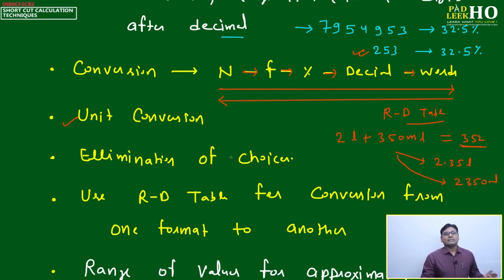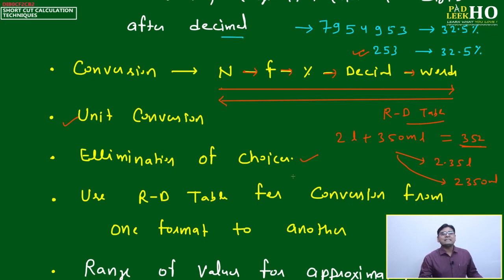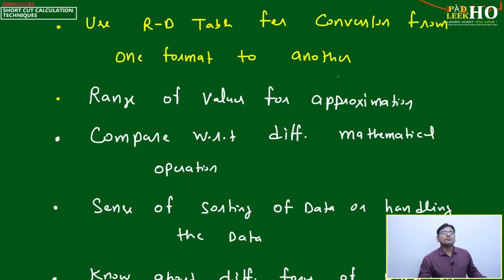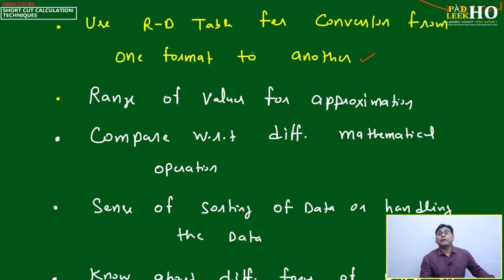If you skip unit conversion, you might get a numerical answer that actually appears in the option choices and mark it — but it will be wrong. Always perform unit conversion first. Use the RD table for format conversions — number to fraction, fraction to decimal, and so on — because you can apply it in many different ways, and the level at which you can exploit it is very high.